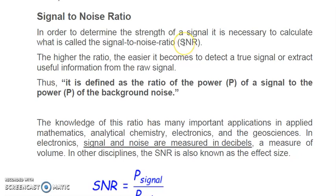Signal means a useful physical quantity that should be heard or received. Noise means a destructive signal which should be completely eliminated. So signal to noise ratio means signal divided by noise.